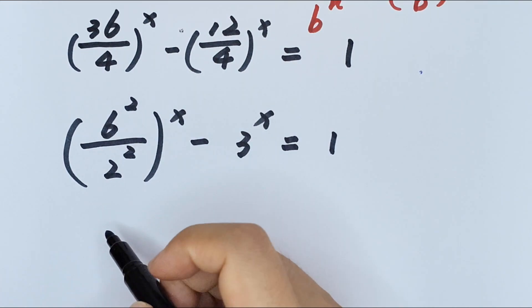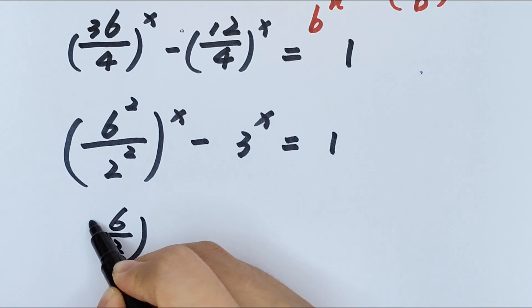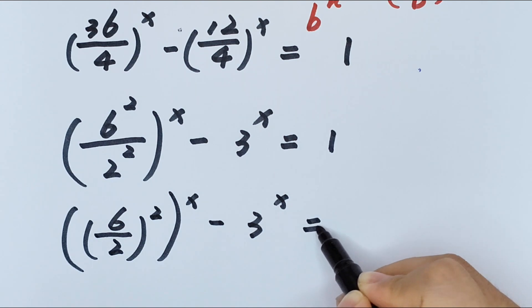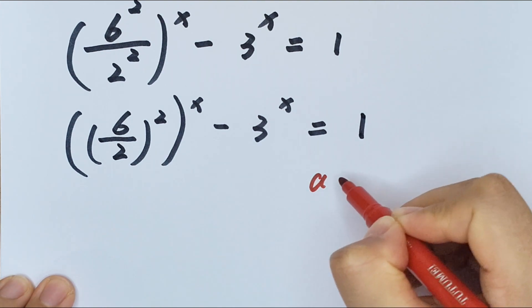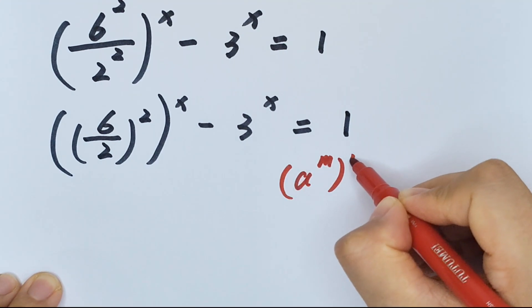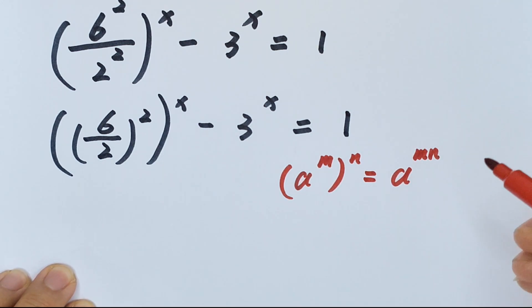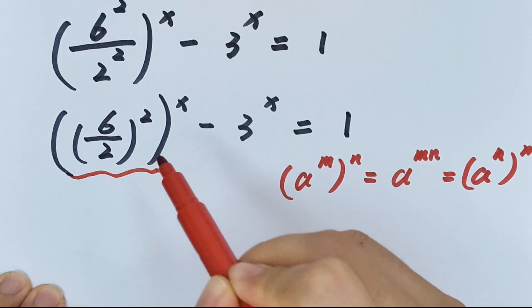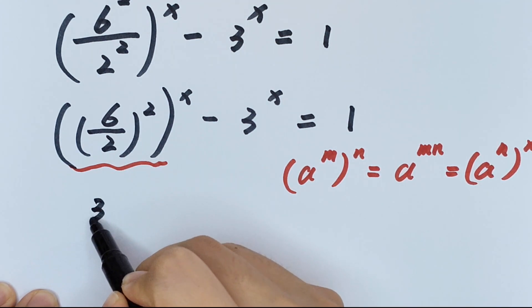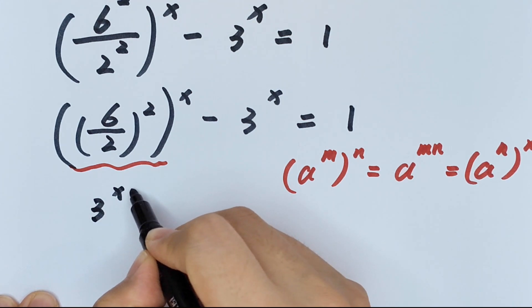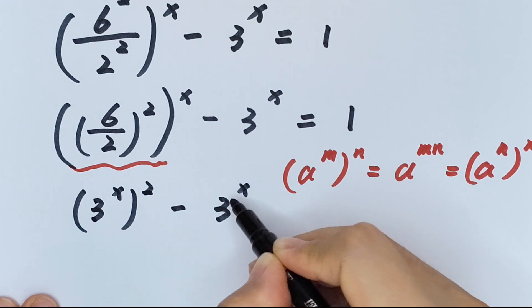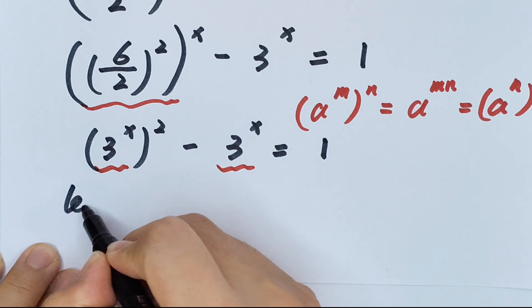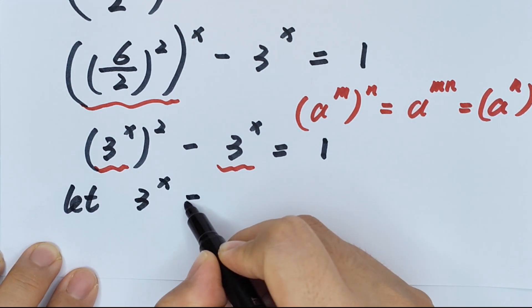Applying the exponent rule, this becomes (6/2) to the power of 2x minus 3 to the power of x equals 1, which simplifies to 3 to the power of 2x minus 3 to the power of x equals 1. Since 3 to the power of x is common, we let 3 to the power of x equal t.